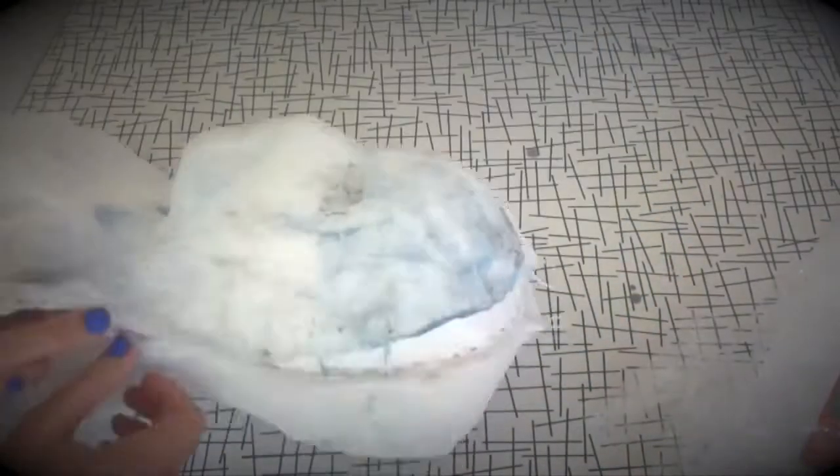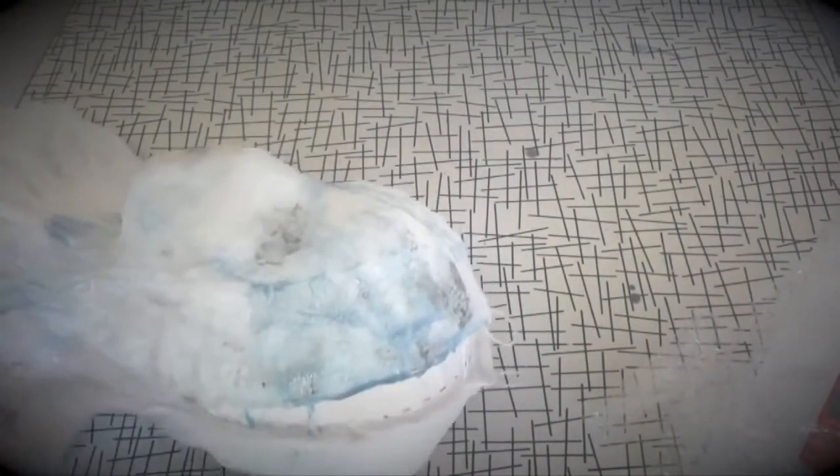Let both pieces dry for a few hours and then gently begin working them off the form. If they are completely dry and you use plastic wrap, this will not be difficult.